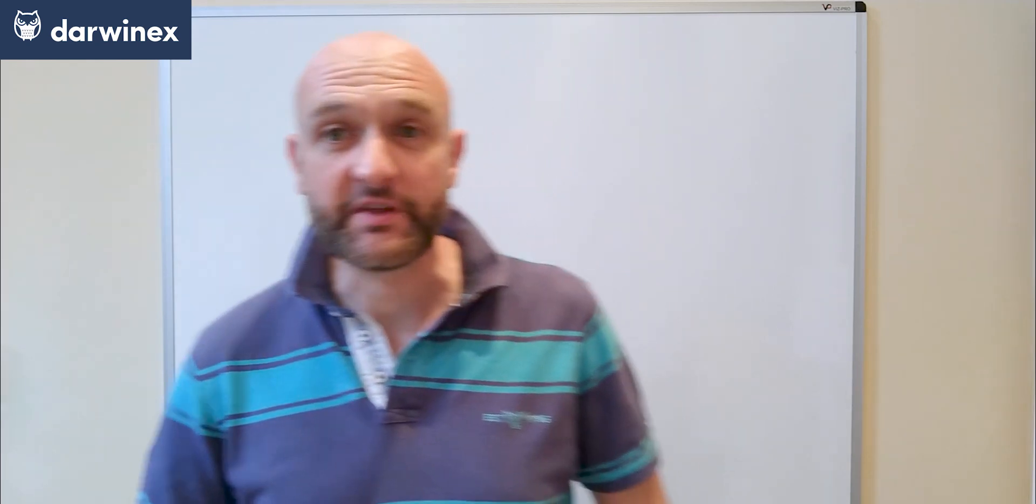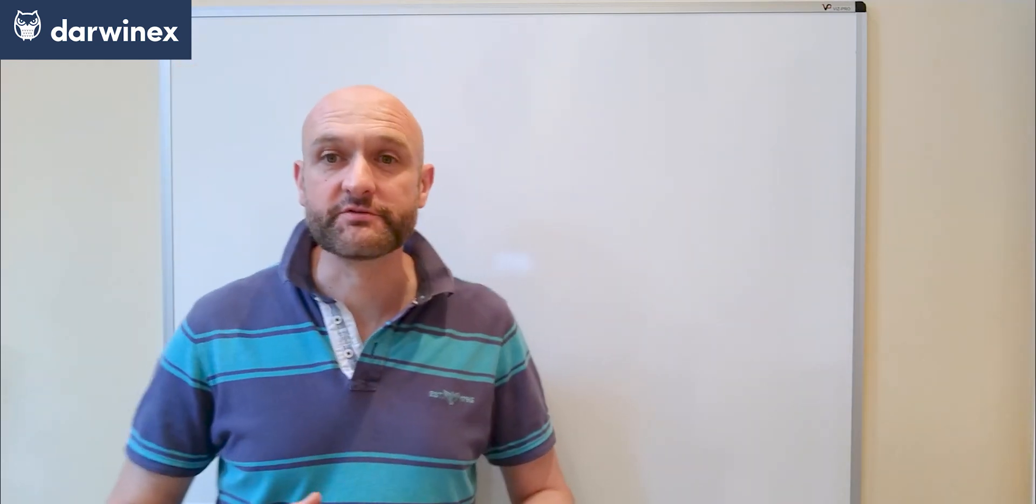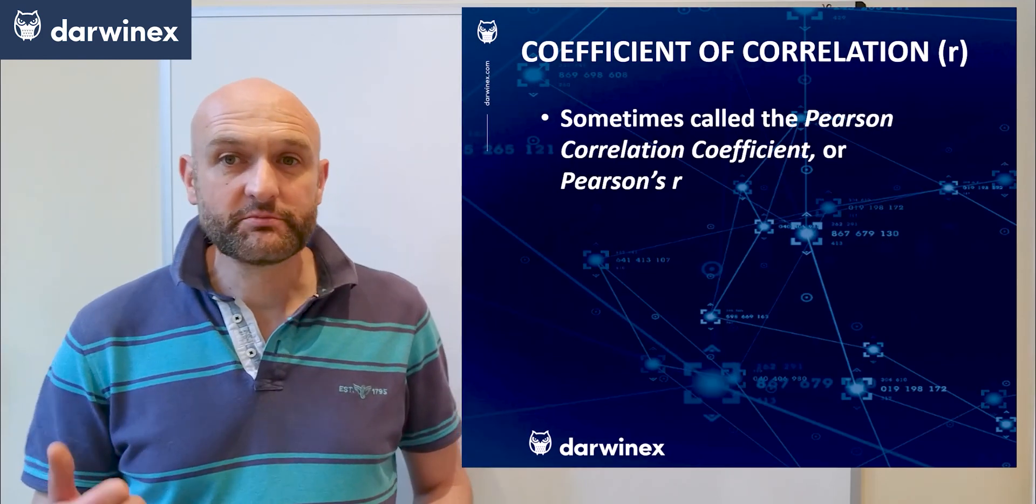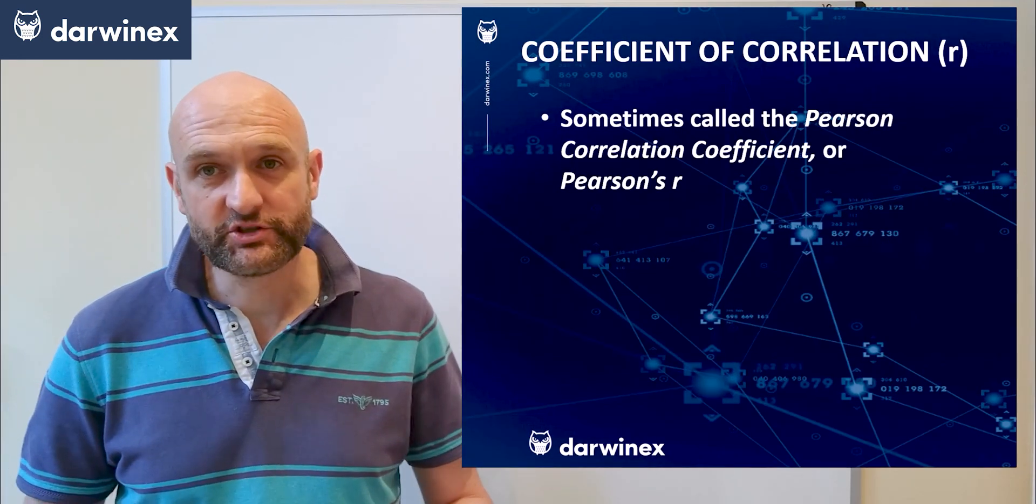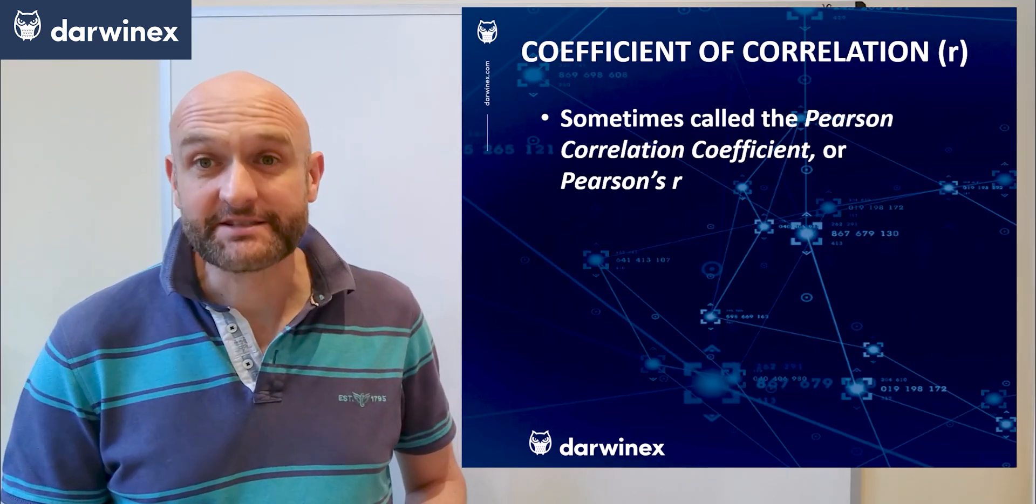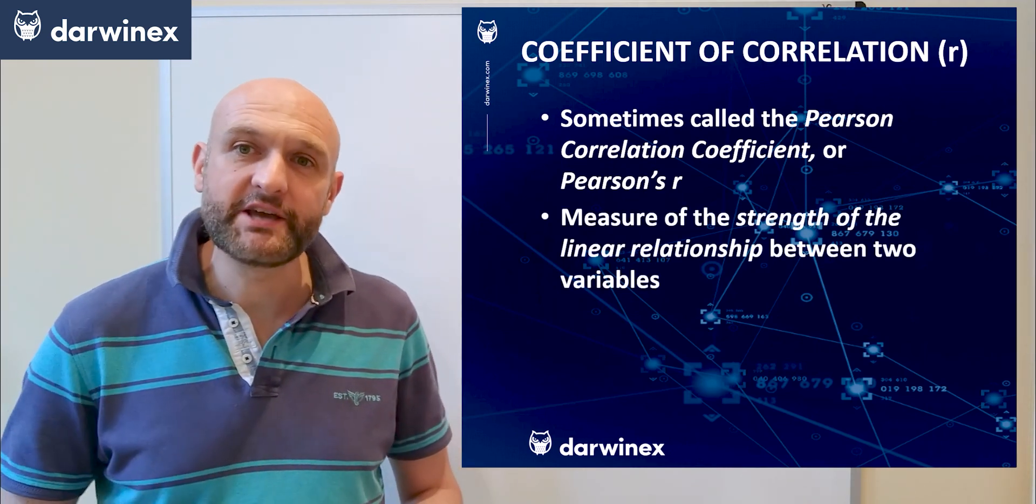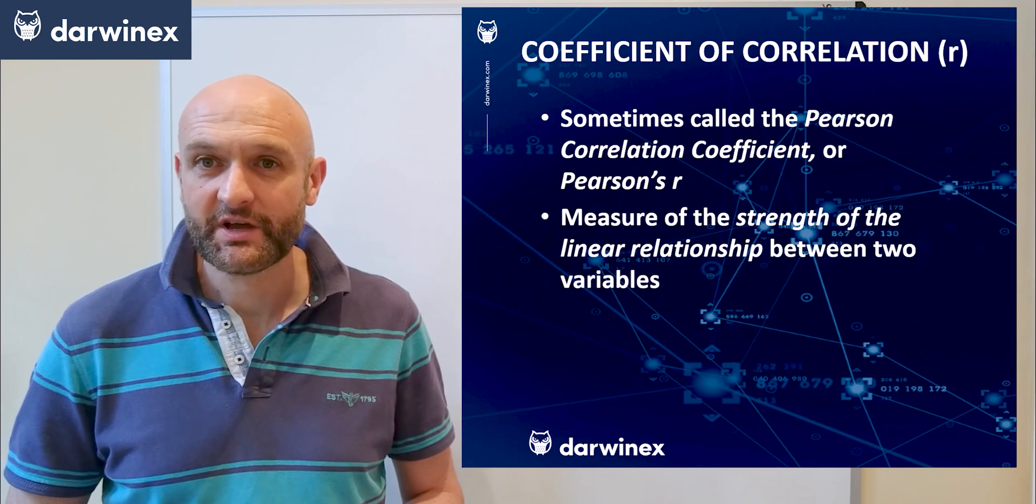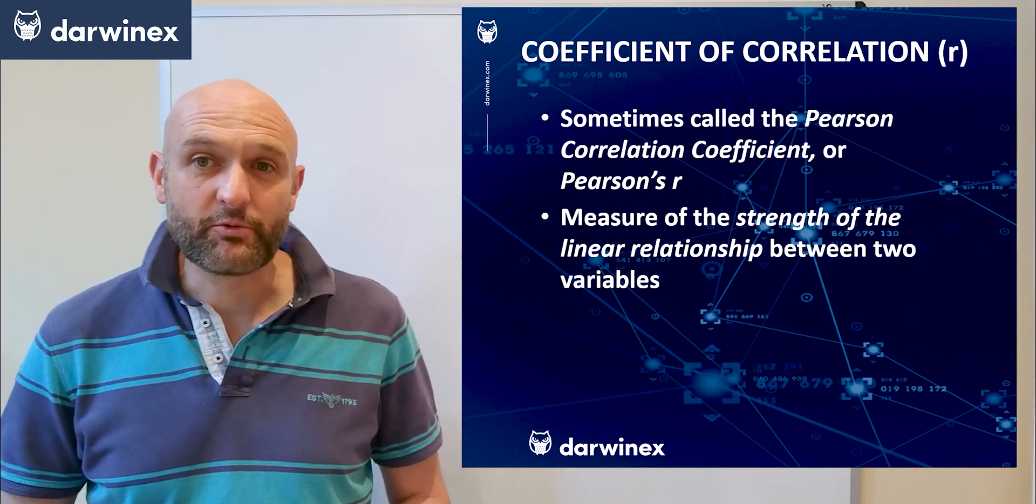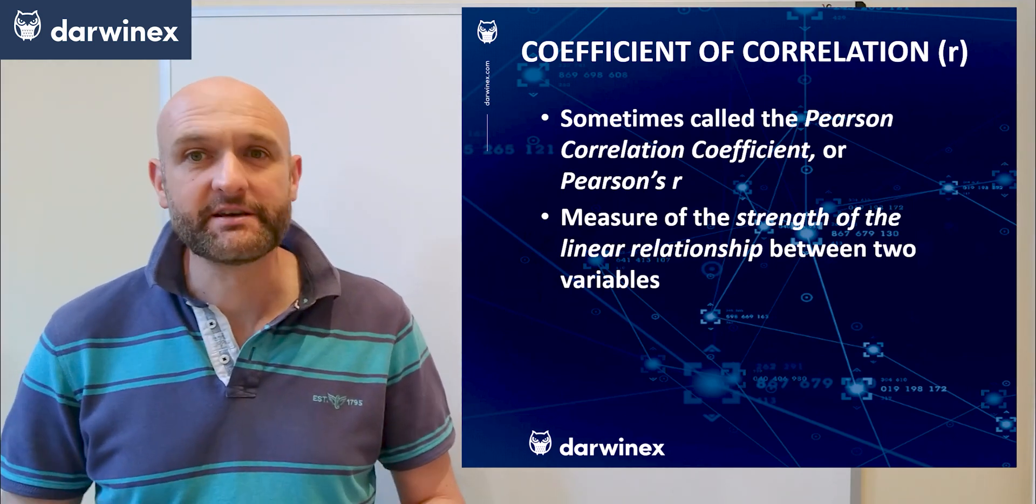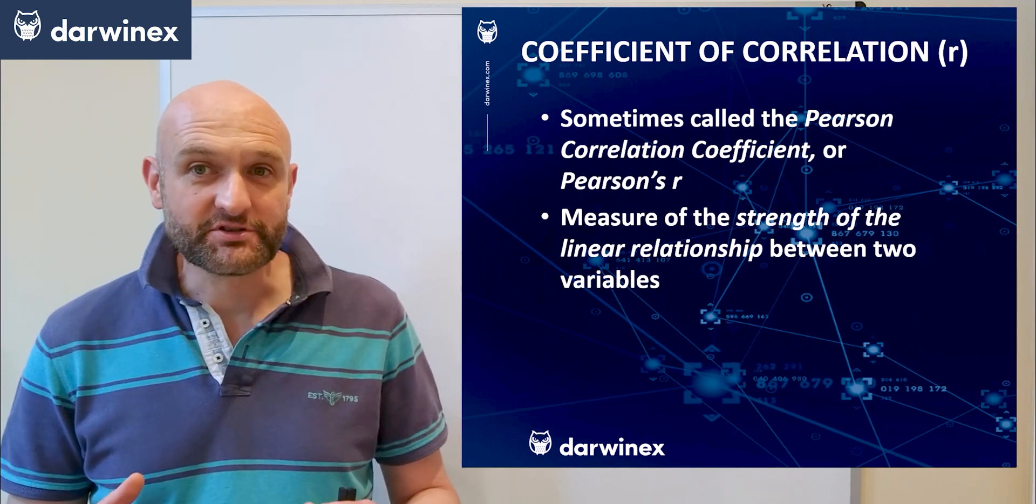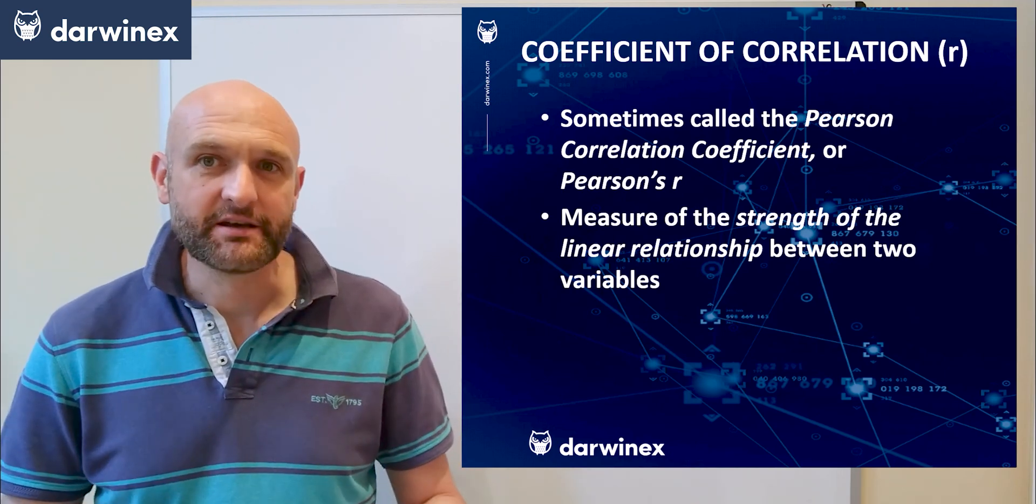We now move on to two metrics that are based on linear regression models. The first of these is called the coefficient of correlation, sometimes called the Pearson coefficient and denoted by the letter r. This provides us with a measure of the correlation between two variables, and in a moment I'll show you how we can use this on an equity curve.